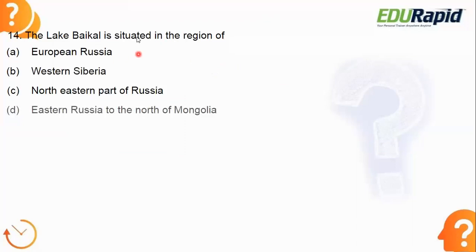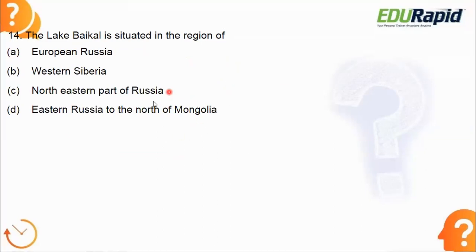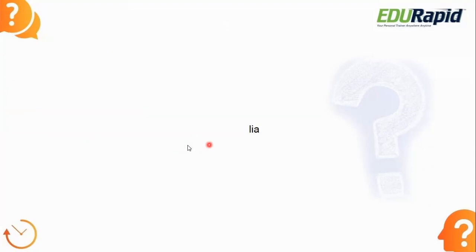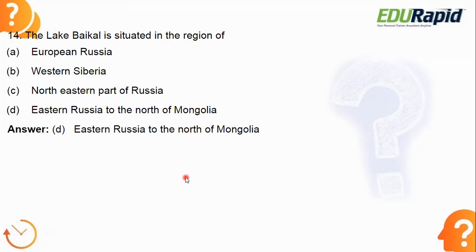Next: Lake Baikal is situated in which region — European Russia, Western Siberia, northeastern part of Russia, or Eastern Russia to north of Mongolia? The answer is option D — it is situated in Eastern Russia to the north of Mongolia. Yesterday we saw the picture of Lake Baikal and its location.